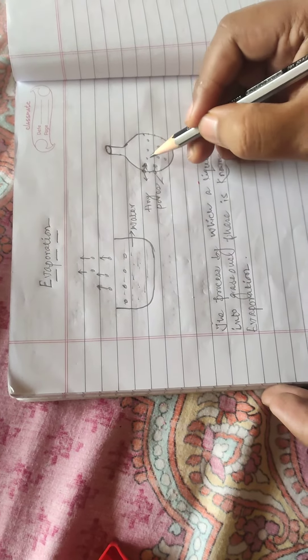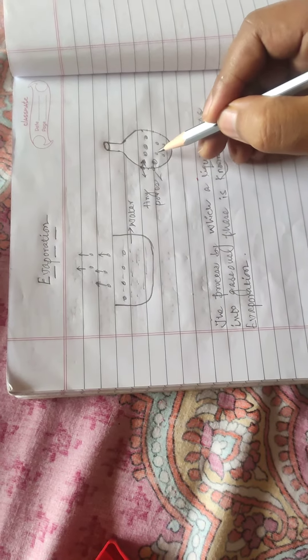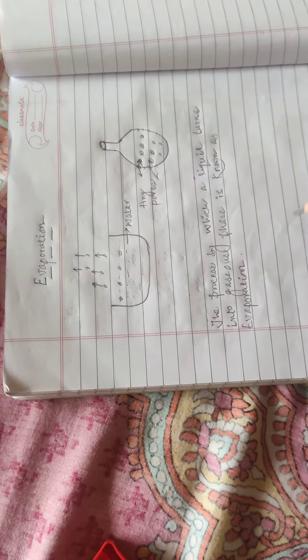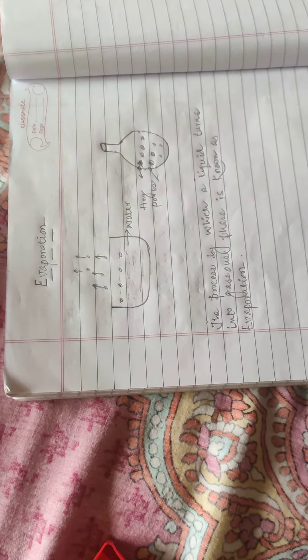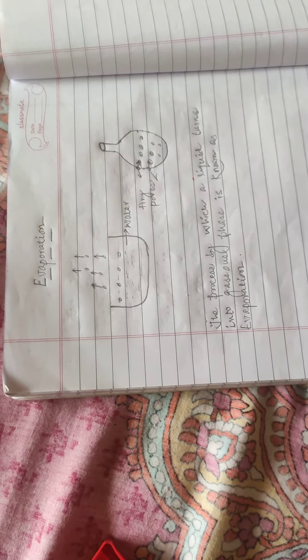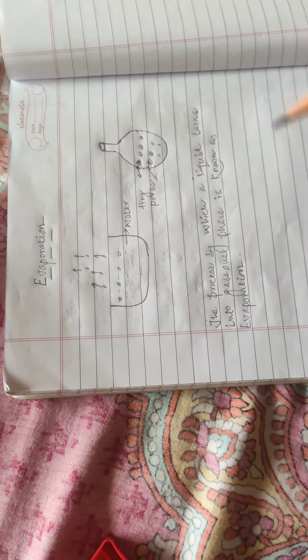One more example is that we sweat in summer. This is also known as perspiration. When we sweat, the water molecules that come to our skin take heat from the inside of our body and evaporate, so that our body remains cool. This is the idea of evaporation.